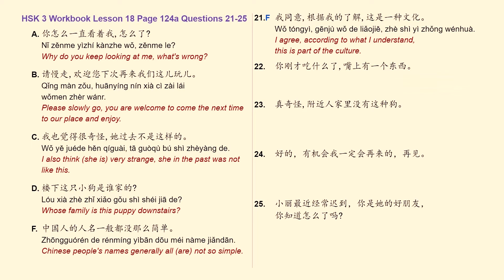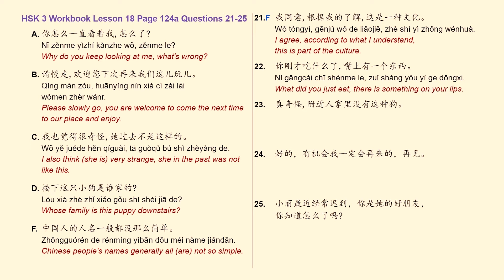Letter F: 中国人的名字一般都没那么简单。 — Chinese people's names generally are not so simple. Sentence number 22: 你刚才吃什么了？嘴上有一个东西。 — What did you just eat? There is something on your lips. Related to that, we have letter A: 你怎么一直看着我？怎么了？ — Why do you keep looking at me? What's wrong?